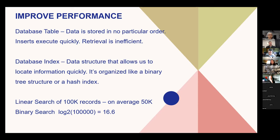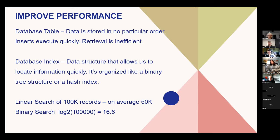These data structures are usually some type of binary tree structure or a hash index. A binary search algorithm essentially lets you take the middle value. If you were searching through 100,000 records, you'd look at record 50,000 and ask if the value is too big or too low, then cut the list in half repeatedly. On average, searching 100,000 records linearly takes about 50,000 comparisons, while a binary search takes only about 16.6 retrievals — a huge difference.